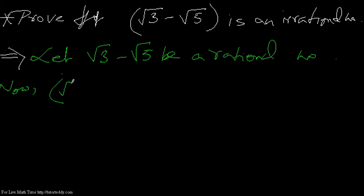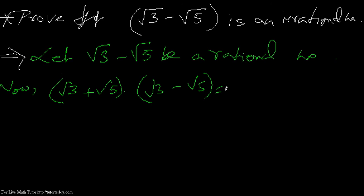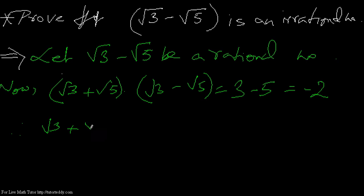We multiply by the conjugate √3 plus √5. Multiplying (√3 + √5) with (√3 - √5) uses the formula (a + b)(a - b) = a² - b², so we get √3 × √3 = 3 minus b² which means 5, giving us 3 - 5 = -2. Therefore √3 + √5 = -2 divided by (√3 - √5).